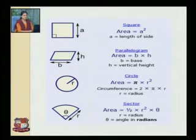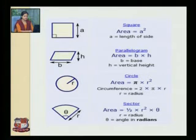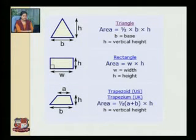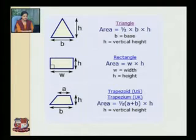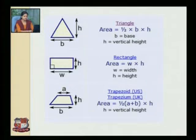Area of square is A squared, where A is the length of the side. Area of parallelogram is B into H, where B is the base and H is the vertical height. Area of circle is pi R squared; area of semicircle is 1/2 pi R squared. Area of triangle is 1/2 B into H. Area of rectangle is W into H, where W is the width and H is the height. Area of trapezium is half (A plus B) into H, where A and B are the base lengths and H is the vertical height.